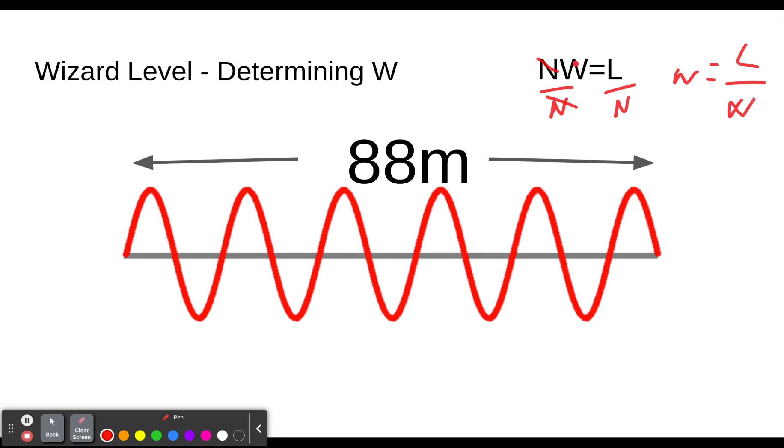So for this first example we're going to do together, W would be a length of 88 meters divided by, and then we would have to count. So 0.5, one, 1.5, two, 2.5, three, 3.5, four, 4.5, five, 5.5. So this entire thing is 5.5 waves long. So 5.5 waves. And you don't have to write waves. Anyway, so we do 88 divided by 5.5, and we find W equals 22. And notice the units are going to be meters per wave. And since the definition is how long is one wave, 22 meters is the length.